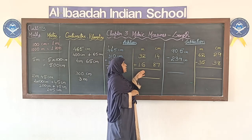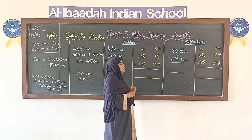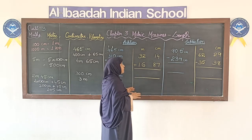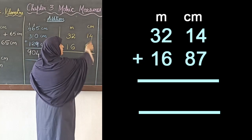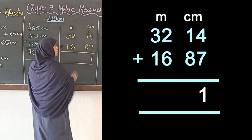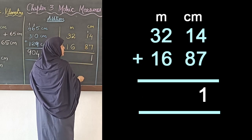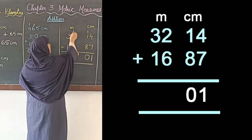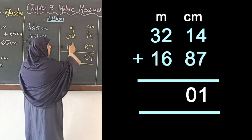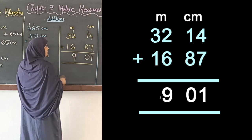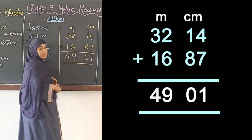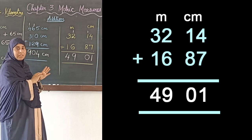Now for numbers with both meters and centimeters, we follow the same process. Starting from centimeters: 4 + 7 = 11, write 1 carry 1. Next: 1 + 1 = 2, 2 + 8 = 10, write 0 carry 1 to the meters column. Then in meters: 1 + 2 = 3, 3 + 6 = 9, and 3 + 1 = 4. Answer: 49 meters and 1 centimeter.